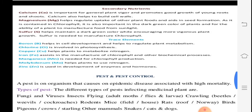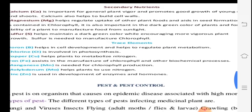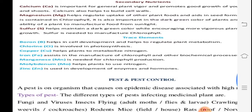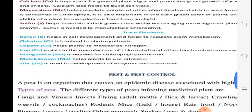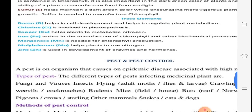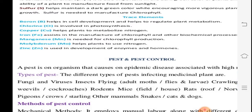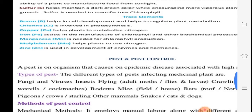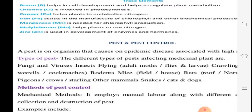Secondary nutrients: calcium promotes good growth and helps build cell walls. Magnesium regulates seed formation and is needed for chlorophyll. Sulfur is necessary to maintain green color and carry more vigorous growth. Trace elements help plant metabolism — boron, chlorine in photosynthesis, copper in nitrogen metabolism, iron assists in chlorophyll manufacture, and molybdenum acts as a natural catalyst.